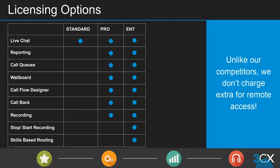On licensing: the key point is that customers need a Pro or Enterprise license for contact center functionality — Standard doesn't include call queues. You might give them a Standard trial to familiarize themselves with the web client interface, but for live chat, reporting, wallboards, and the like they'll need Pro. The two main upsell opportunities specifically for contact centers are skills-based routing and stop and start call recording — both enterprise features. And remote working is included in the license at no extra charge.